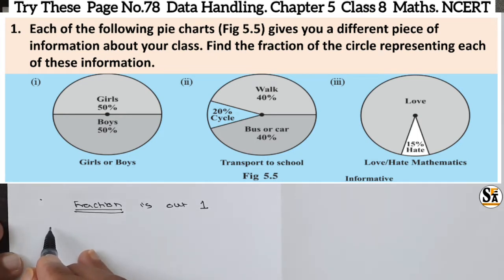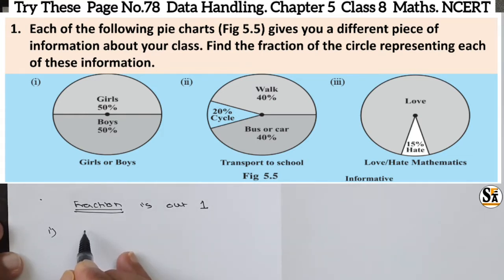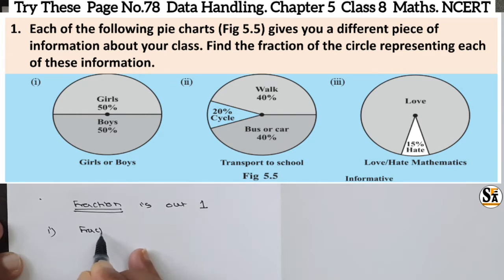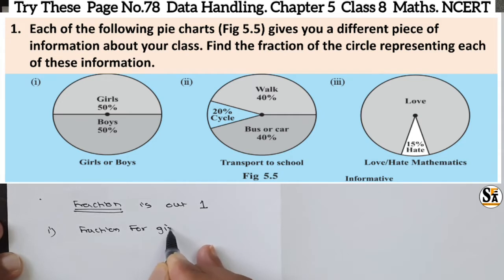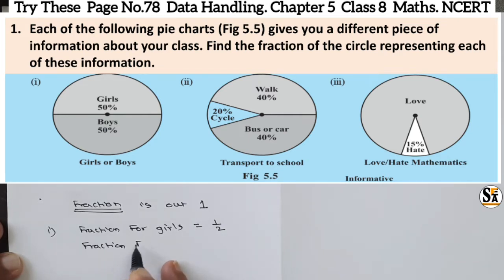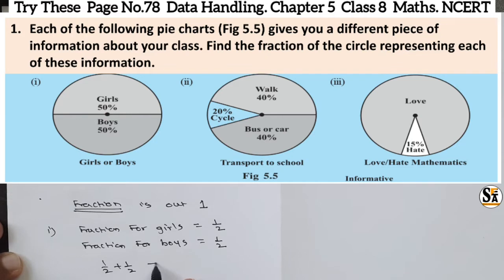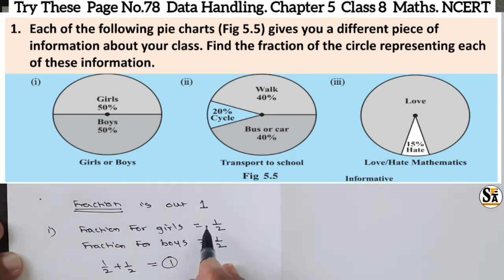In the first figure, girls and boys distribution is given. There are 50% girls, meaning half the class is girls. So the fraction for girls is 1/2 and the fraction for boys is also 1/2. If we add 1/2 plus 1/2, we get 1. So the condition is satisfied: the addition of all fractions must equal 1.